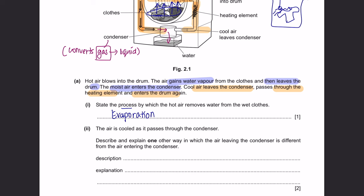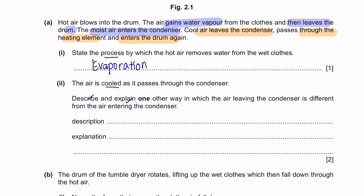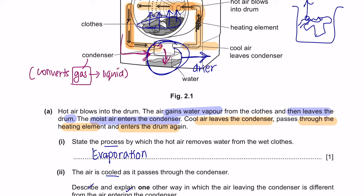Part 2: the air is cooled as it passes through the condenser. Describe and explain one other way in which the air leaving the condenser is different from the air entering. The water vapour converts into liquid inside the condenser, so the air that comes out does not contain any water vapour anymore — meaning the air is drier. The reason is because the water vapour has condensed.